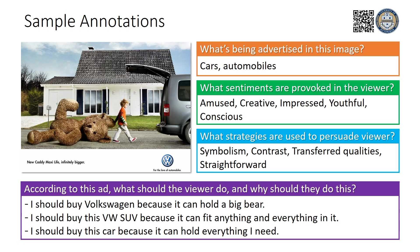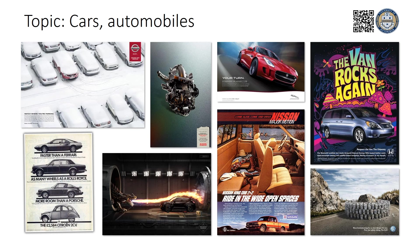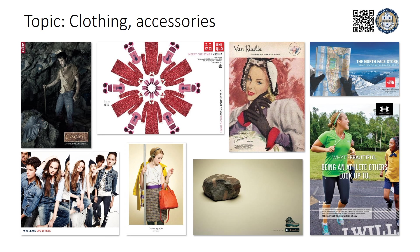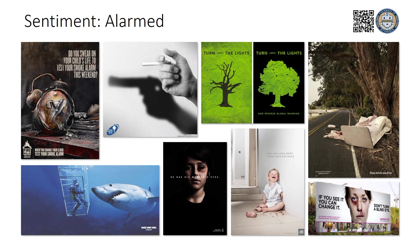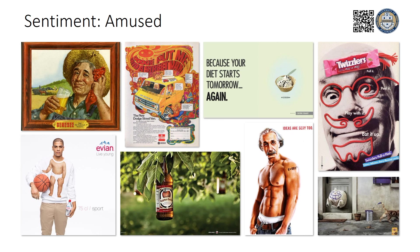Here is one sample annotation from our dataset. Our annotations cover the topic of ads, the sentiment it provokes in the viewers, the strategies it relies on, and questions and answers about what action the viewer is prompted to take. Each ad is annotated by three to five annotators. Here are some examples of car, clothing, and environment ads. We have both commercial and public service announcement ads, and diverse ads within each category. Here are some other examples of ads that cause the viewers to be alarmed, amused, or disturbed.